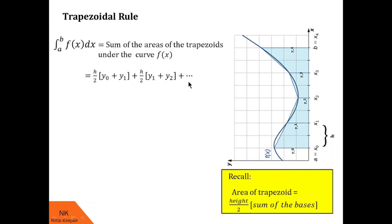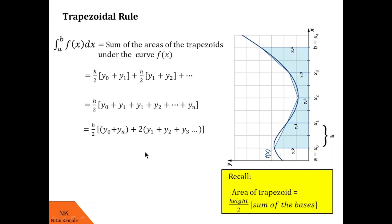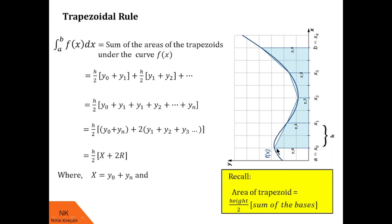Now we see that h/2 is common in every term. So when we take it out, inside the bracket we will have y0 once, y1 twice, y2 twice, and yn once. We write this as h/2 into (y0 plus yn) plus 2 times (y1 plus y2 up to yn minus 1). We call y0 plus yn as X and y1 plus y2 plus y3 up to yn minus 1 as R. The integral of f(x) dx over the limit a to b will be h/2 into X plus 2R, where X is the sum of extreme ordinates and R is the sum of remaining ordinates.